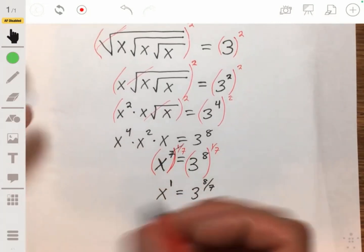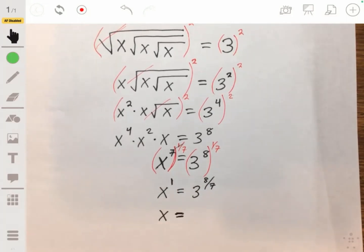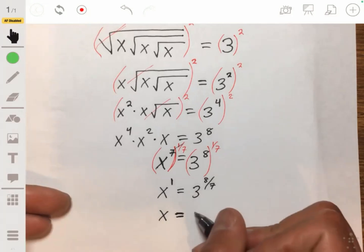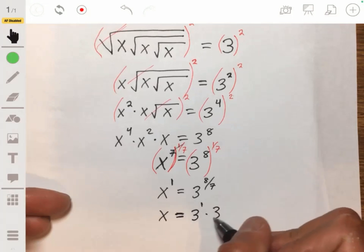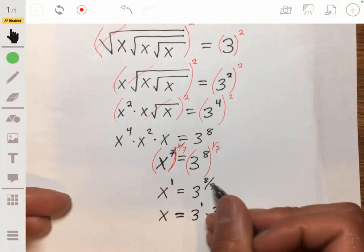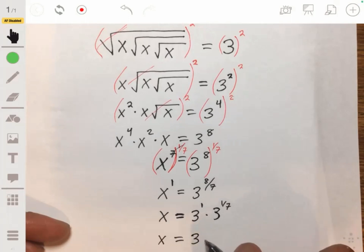And depending on the answer that they require, them being the test people, you may need to break it up into 3 to the 1 times 3 to the one-seventh. Because 1 plus one-seventh is eight-sevenths. And then maybe they want it in radical form, so 3 times the seventh root of 3.